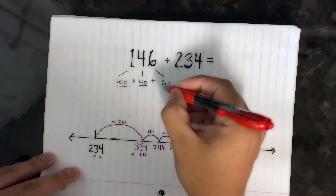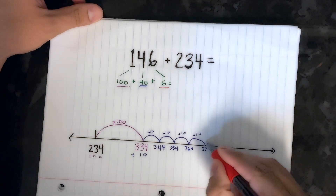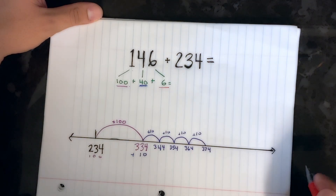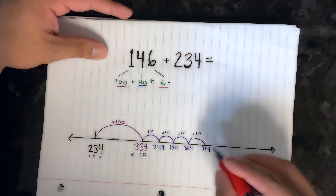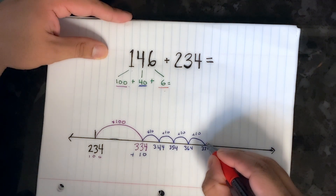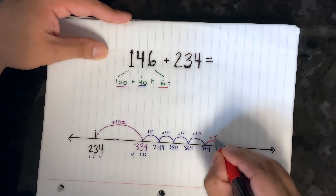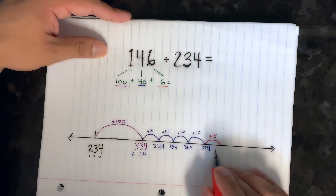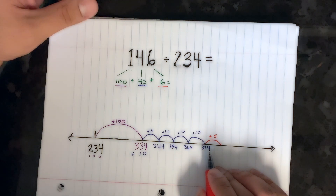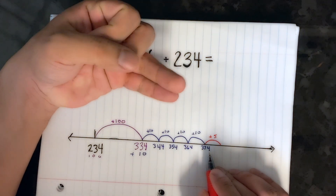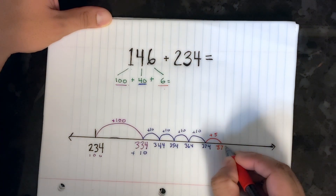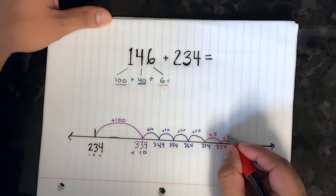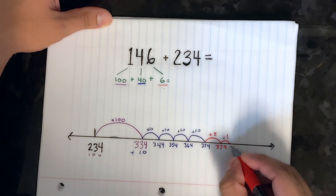And now for our ones spot — we're going to jump six more because we have six in our ones place. I know that five plus one equals six, so I'm going to jump five first, then count on: 374, 375, 376, 377, 378, 379 — so we have 379 — and then plus one more to make it six: 380.